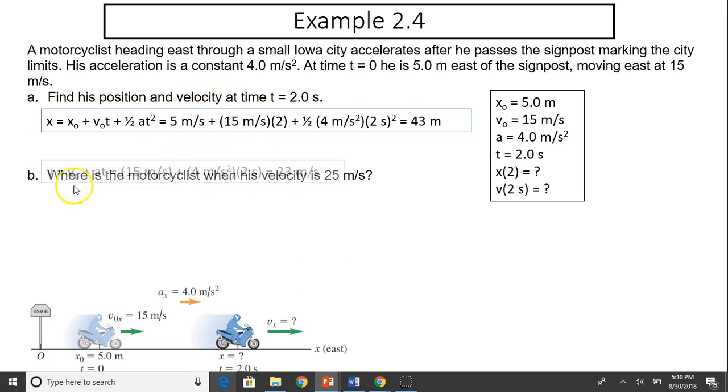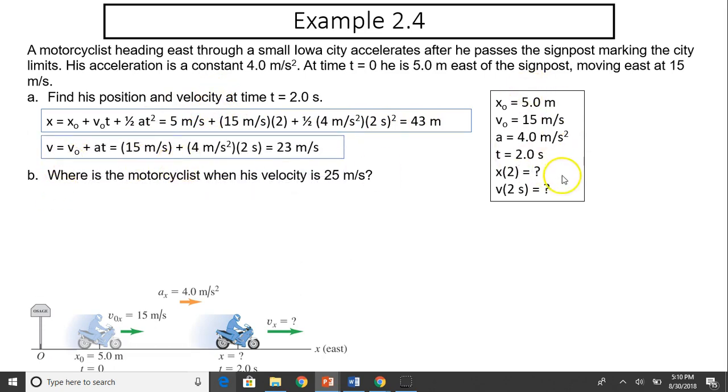Next, you have velocity. Again, you choose your equation according to what's given, and you should have 23 meters per second.